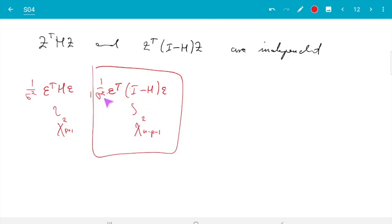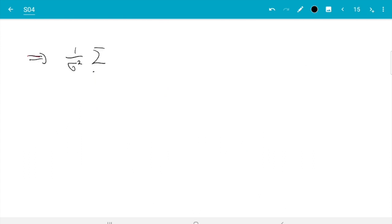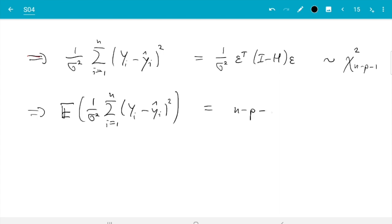We know if we divide it by sigma squared then we get a chi-squared distribution with n minus p minus 1 degrees of freedom. So let's do the dividing. 1 over sigma squared sum i from 1 to n yi minus y hat i squared is 1 over sigma squared epsilon transpose identity minus hat matrix epsilon is Cochran theorem says chi-squared distributed with n minus p minus 1 degrees of freedom. And in the video about Cochran theorem I mentioned the expectation of a chi-squared distribution equals the number of degrees of freedom. So expectation of all of this equals n minus p minus 1.